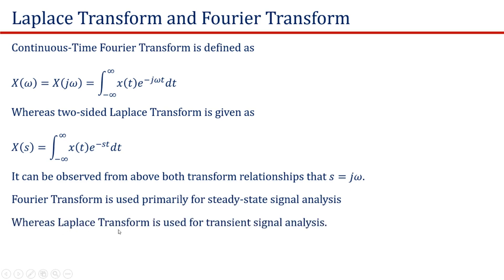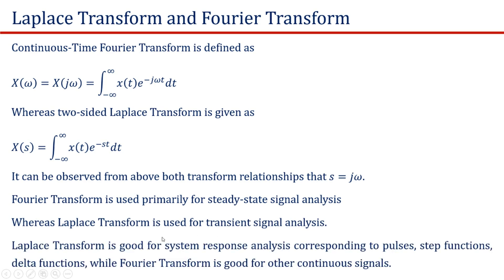Whereas the Laplace transform is used in transient signal analysis. The Laplace transform is good for system response analysis corresponding to pulses, step functions, and delta functions, while the Fourier transform is good for other continuous-time signals.